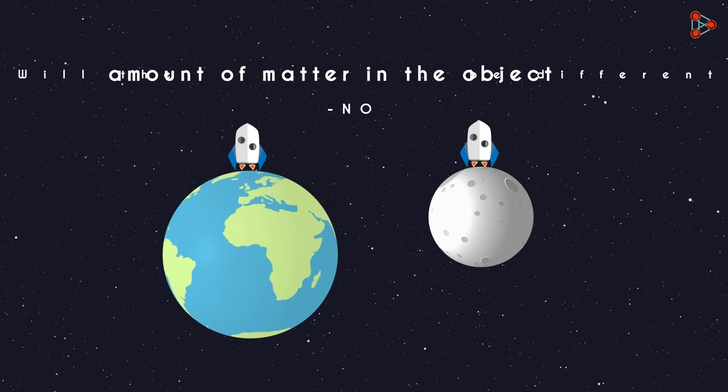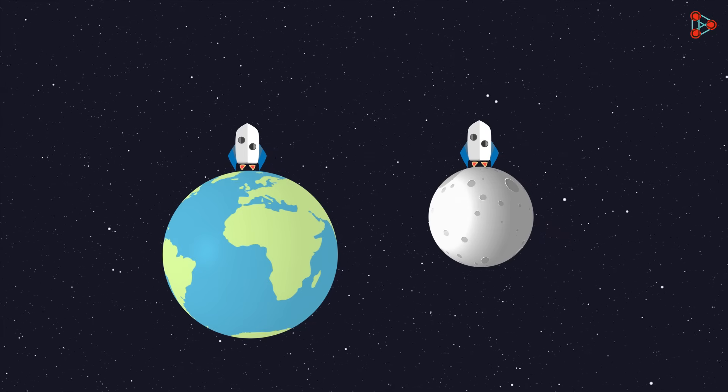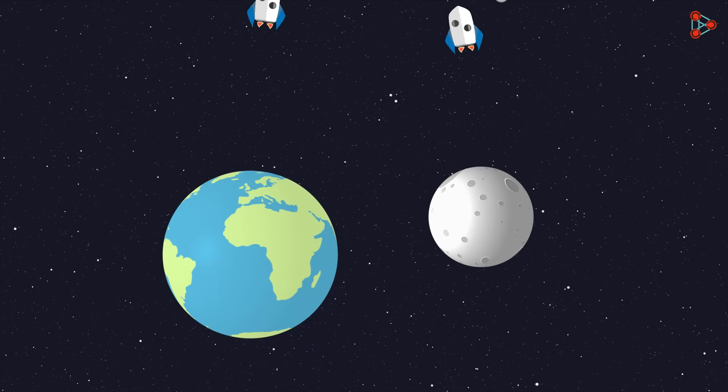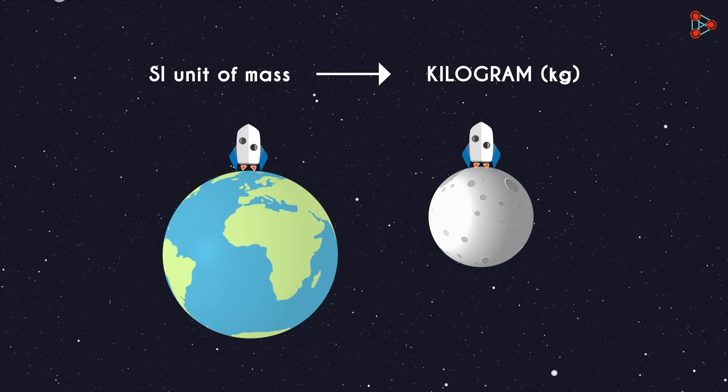The matter in the object is not changing at all, which is why the mass will be the same in each of the cases. The mass of an object remains constant no matter where it is placed. The standard metric unit of mass is the kilogram.